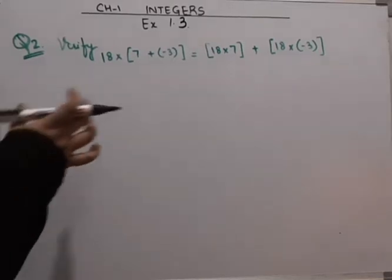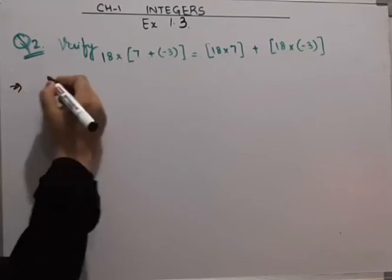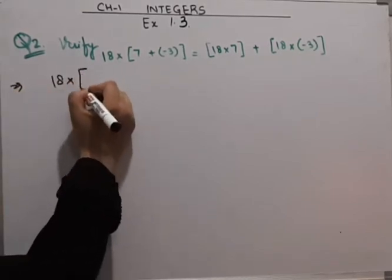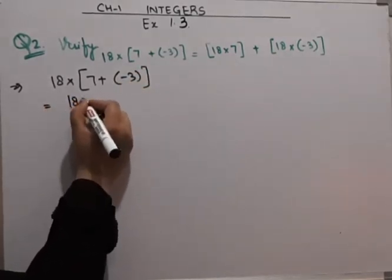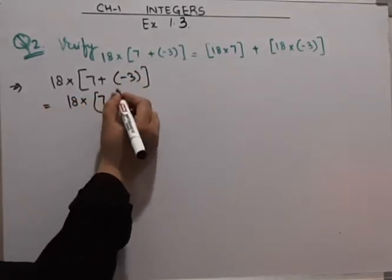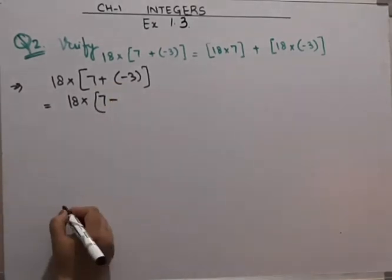Starting with the left hand side. Left hand side is 18 into 7 plus minus 3. This will be 18 into 7, plus minus is minus.